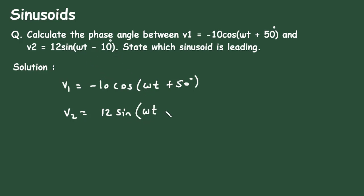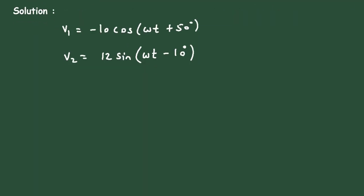Now, first of all we need to convert this minus cosine into plus cosine, and for V2 we have to convert the sine into cosine.